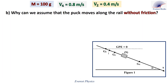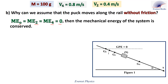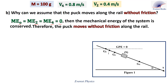Part 2b: Why can we assume that the puck moves along the rail without friction? In part 2a, we found that ME0 equals ME at T2 equals ME at T4, all equal to 0. Therefore, the mechanical energy of the system is conserved, which means the puck moves without friction along the rail.